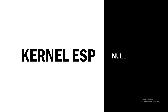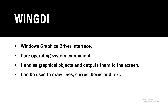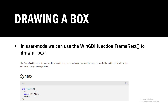This is going to be the last episode of the kernel series. We're basically just going to draw ESP from our kernel driver by implementing the WinGDI functions. WinGDI stands for Windows Graphics Driver Interface - it's a core operating system component that lets you output to your screen. We can draw lines, curves, boxes, and text. In this video we're focusing on boxes, but you can follow the same steps to implement draw text, lines, or whatever you want. In user mode you can just use the FrameRect function to draw a box on your screen.